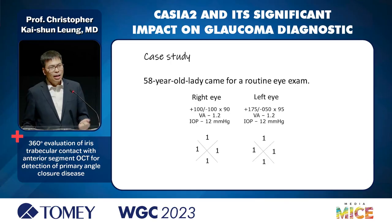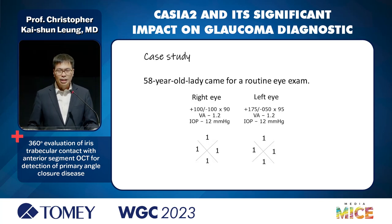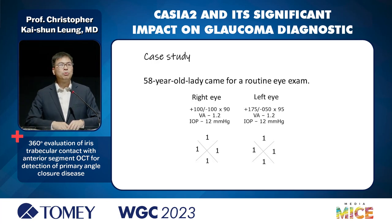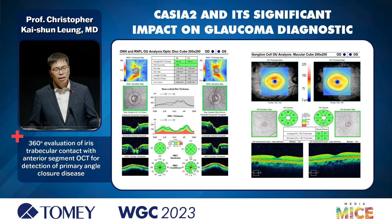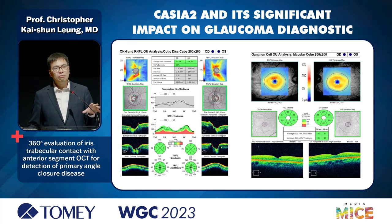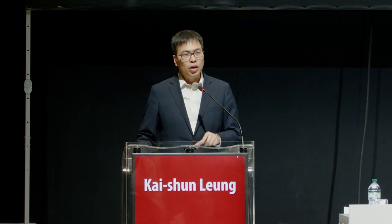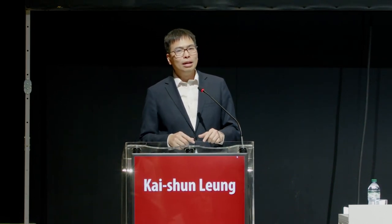But what we don't know is who would actually need LPI. Here we have a case: a 58-year-old lady who came for a routine eye exam with normal IOP. Gonioscopy showed we could see the trabecular meshwork but couldn't see the posterior trabecular meshwork for 360 degrees. OCT showed a normal-looking retinal nerve fiber layer and normal ganglion cell complex. The diagnosis is compatible with primary angle closure suspect — PACS. We need to better understand the anatomy of the angle to determine whether this individual would need LPI.